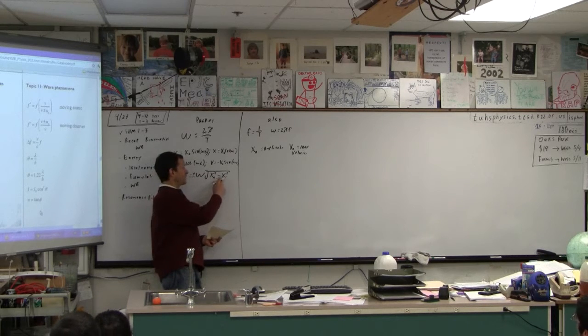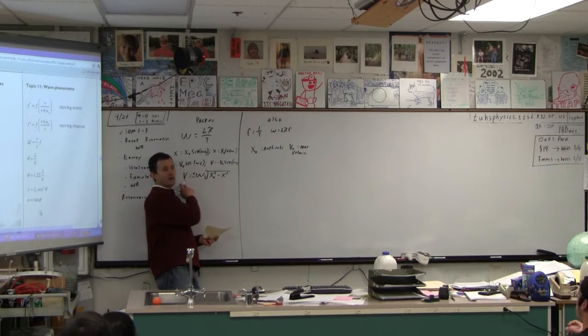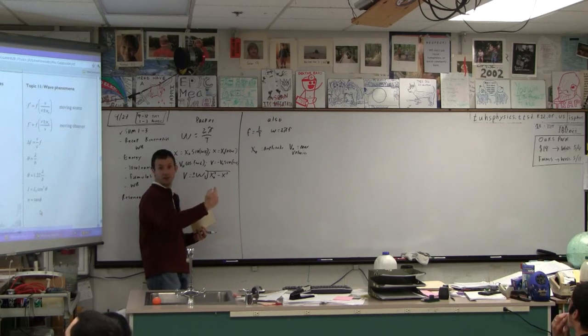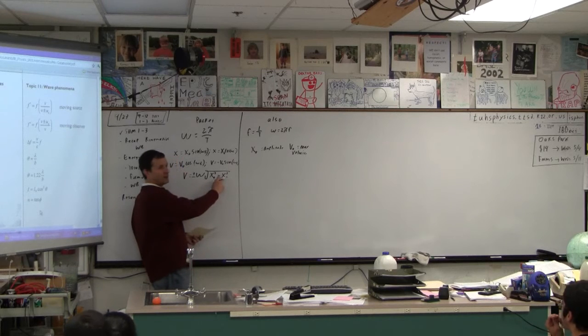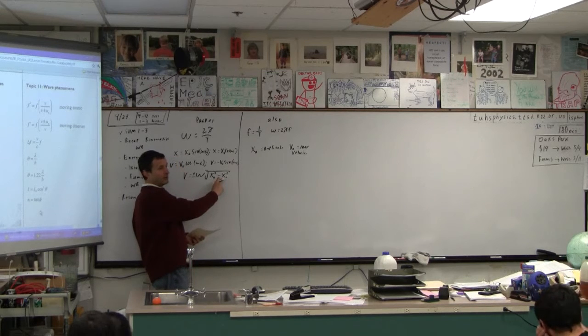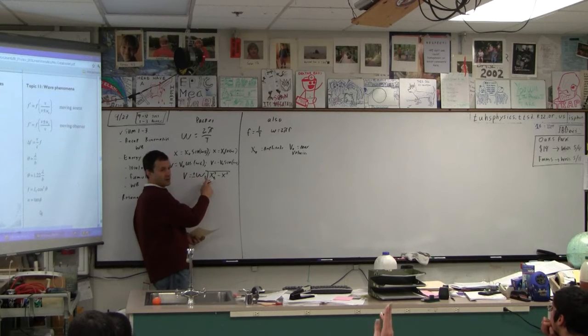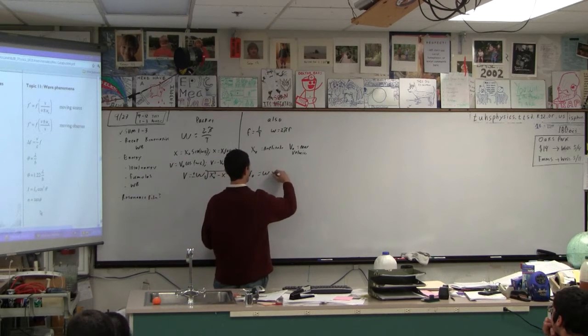Well, what value of x gives you a maximum v? Zero - at equilibrium. In other words, when it reaches equilibrium, it's already sped up as much as it's going to, it's about to slow down. That's the way the spring works. So you put a zero in for that. Then it's just omega times the square root of x₀². Isn't that just omega x₀? So that's something you need to know - v₀ is just ωx₀.